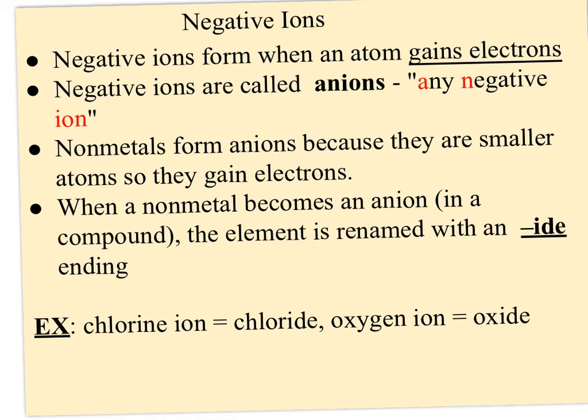So when a nonmetal becomes an anion, we rename the element to an -ide ending. So when you see sodium chloride, -ide, that lets you know that it's not chlorine by itself, it's chlorine in a compound. And so we call it chloride. And other ones you've probably heard of are oxide, hydride, maybe even sulfide and nitride.